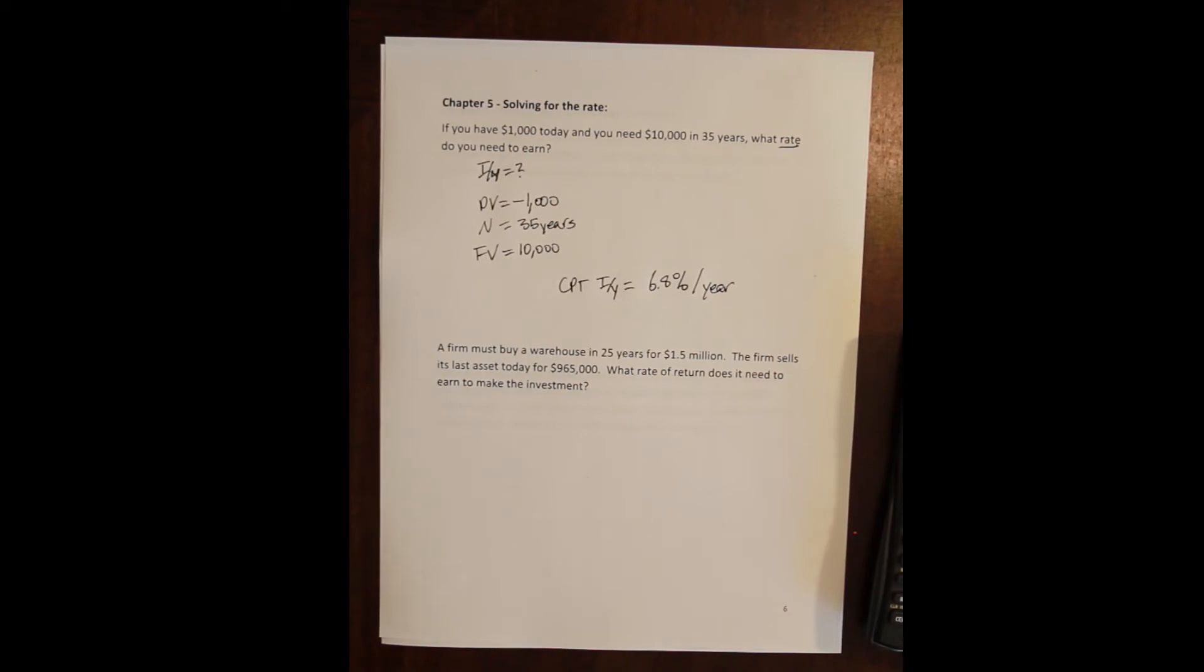Second, a firm must buy a warehouse in 25 years for one and a half million dollars. The firm is going to sell its last asset today for $965,000. What rate of return does it need to earn to make the investment? Now, first just upfront, if you really think about this, this is a terrible business plan, right? No firm is going to sell everything it owns today and then wait 25 years to buy a warehouse for a business that hasn't existed for 25 years. And again, I make these up off the top of my head. There's nothing to learn from these problems except practice in terms of practicing the solutions.